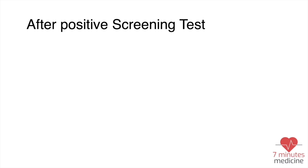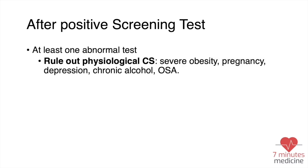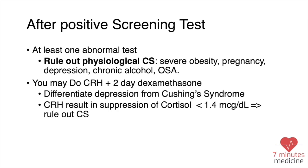If you already performed a screening test for suspected Cushing syndrome and one test came back positive, the next step is to rule out physiologic hypercortisolism — conditions such as pregnancy, chronic alcohol use, or obstructive sleep apnea. Then you confirm your results using the CRH suppression test. CRH should suppress cortisol to less than 1.4 micrograms per deciliter if this is not true Cushing syndrome, indicating the feedback mechanism is intact and cortisol production is not pathologically uncontrolled.